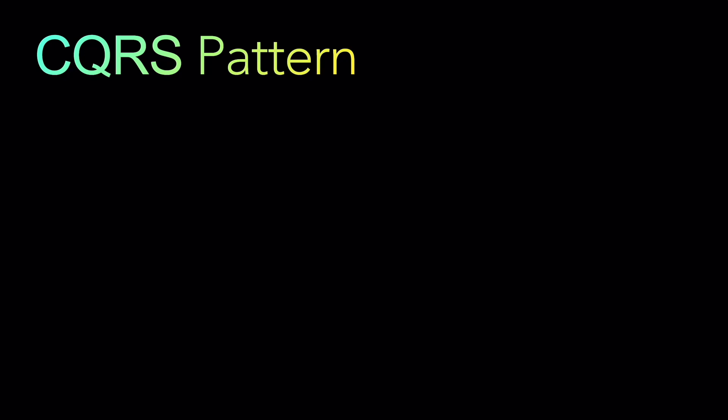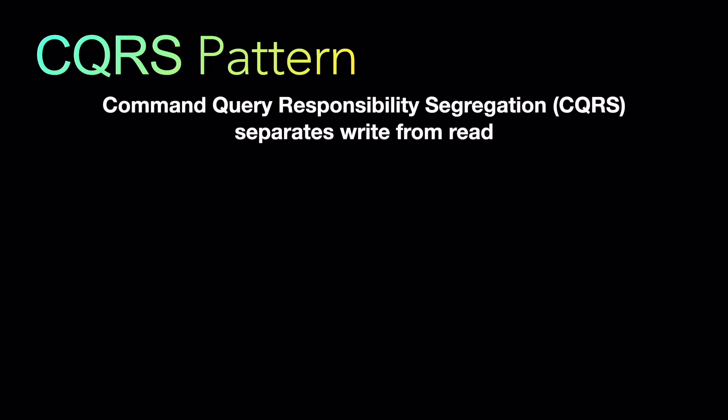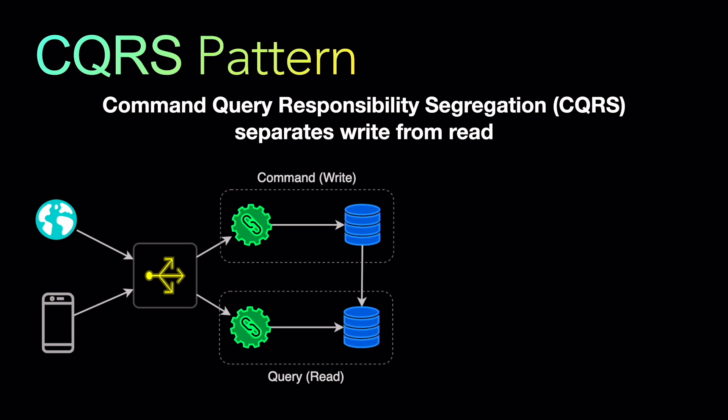CQRS stands for Command Query Responsibility Segregation. It separates the read and the write. Looking at the architecture, there are two microservices, but the path to write the data and the path to read the data are separate. The top microservice is called the command, where you are actually writing the data. That data gets synced and replicated — with some functions in between — into a read database. When clients perform a query, that is the read, they read from a different database. That is the CQRS pattern: it segregates the write from the read, i.e., the command from the query.